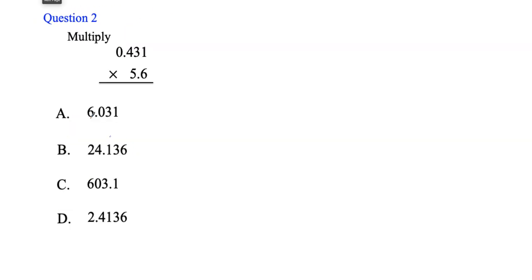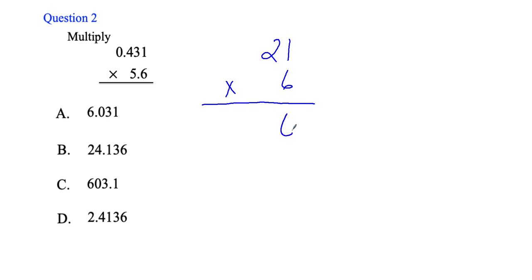Let's go to question two. It says to multiply 0.431 times 5.6. I'm going to show you some test taking strategies here as well. Consider a simpler problem first — 21 times 6. When we multiply, the first thing we do is take 6 times 1, which is 6. So that tells me right away that my answer would have to end in 6. I'll complete the rest: 6 times 1 is 6, 6 times 2 is 12, so the answer is 126 — and it ends in 6.